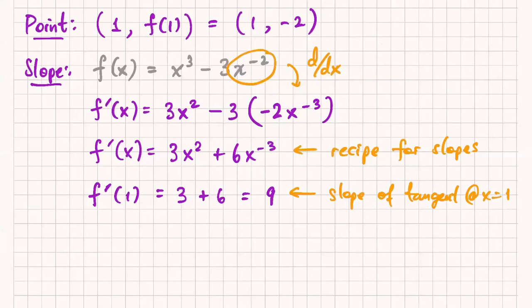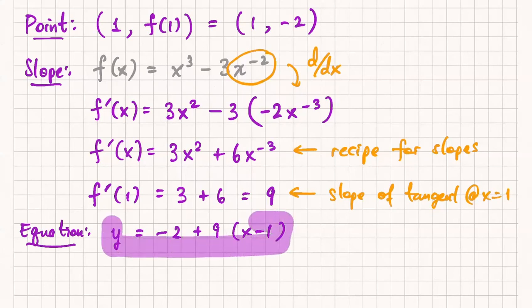Okay, now we're able to write down my equation. So point-slope form, so I get y equals negative 2 plus 9 times x minus 1, and we're all done. Cool.